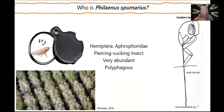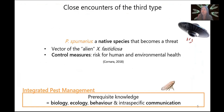Philaenus spumarius is a hemipteran insect belonging to the family Aphrophoridae, which are known to cover themselves in froth when they are nymphs. It's a phloem-sucking insect with a mouth part called the stylet, which it uses to penetrate plant tissues and feed. It's a very abundant and highly polyphagous insect, and this is a problem because, even if it's a native species, it became a threat after the introduction of the bacterium — and due to this high polyphagy and abundance, it became a great problem for European agriculture. Current control measures pose a risk for human and environmental health.